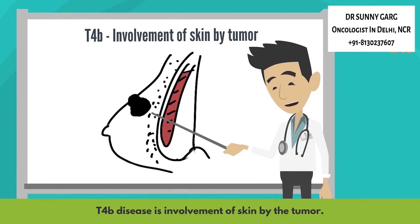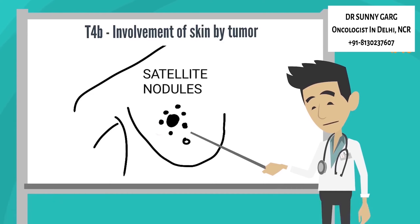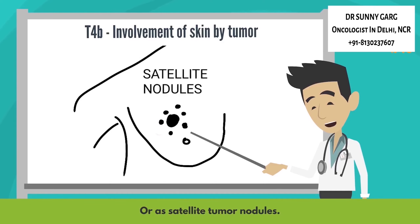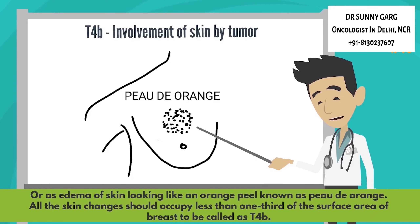T4B disease is involvement of skin by the tumor. It can present as skin ulceration, as satellite tumor nodules, or as edema of skin looking like an orange peel known as peau d'orange. All these skin changes should occupy less than one third of the surface area of the breast to be called T4B.